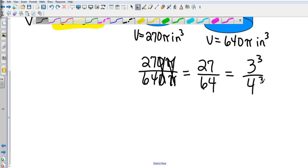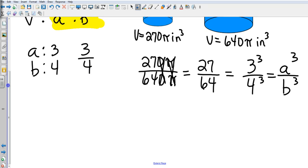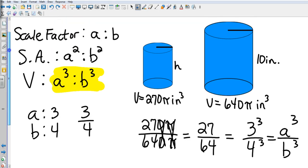That now helps us in our Theorem 12.1 because we now know what a and b are. Our scale factor, or our a, is 3, and our b is 4, so our scale factor is 3/4.